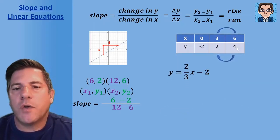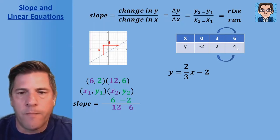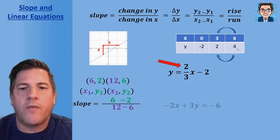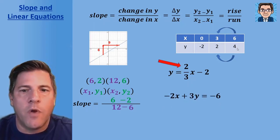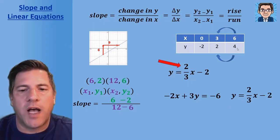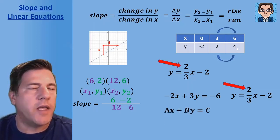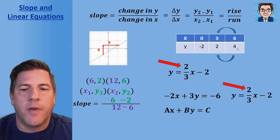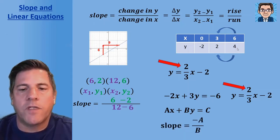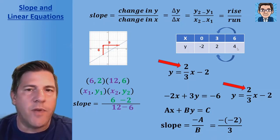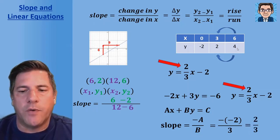For an equation solved for y — in slope-intercept form — we just pick the number being multiplied by x, and that's our slope: two over three. If the equation is not solved for y, we have two choices. We can solve it for y by subtracting 2x from both sides and dividing by three to get slope-intercept form, then read off the slope. Or in standard form ax plus by equals c, the slope is negative a over b. So for this equation it's negative negative two over three, which gives us positive two over three.